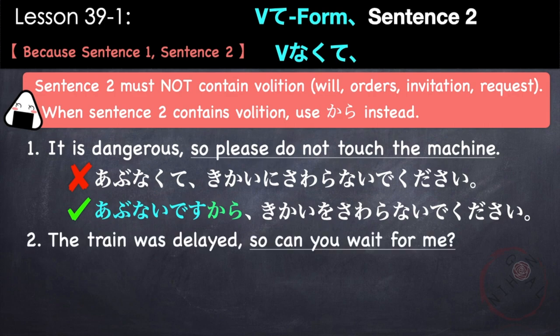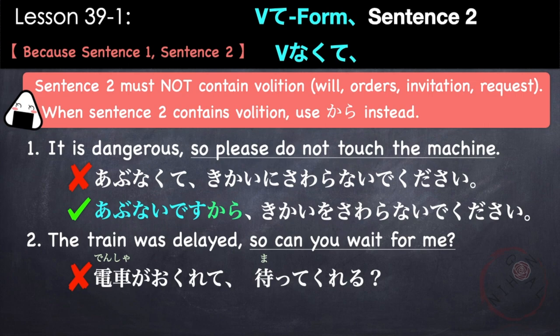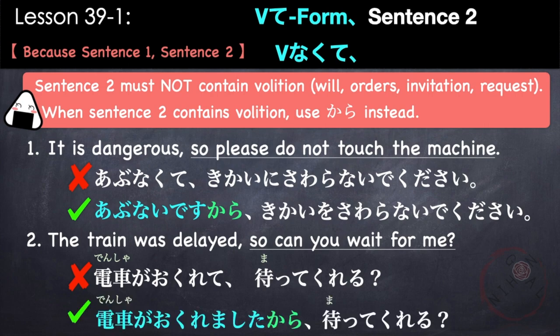Another example: The train was delayed, so can you wait for me? Since this is a request, we cannot use okurete. Instead: 電車が遅れましたから、待ってくれる？ Densha ga okuremashita kara, matte kureru.